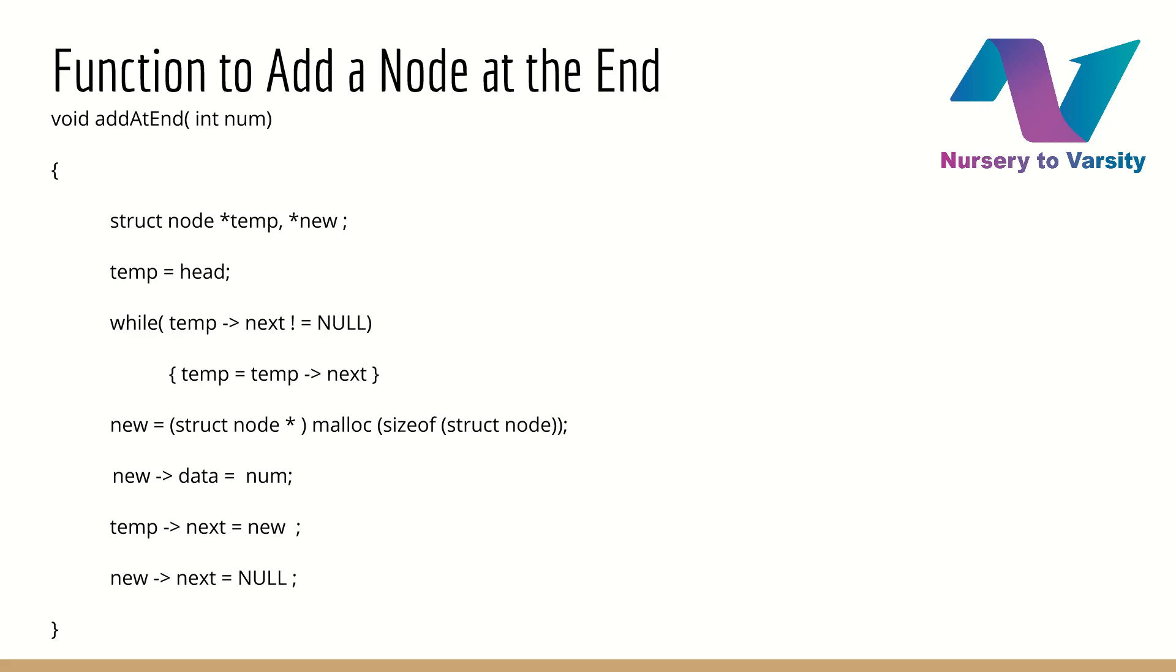Now, this is to insert a new node, that is, new equal to struct node star malloc size of struct node. This is step 5, according to our algorithm, to create a new node, because of malloc call. New structure is created, size of the node can be calculated by size of operator. Size of struct node in brackets. As malloc returns void star, so we have to do typecasting, typecasting to pointer of type node.